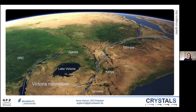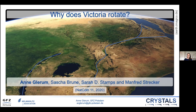The Victoria microplate can be found between the western and the eastern branch of the East African Rift System, which runs from the Afar region in the north all the way down to Mozambique. From geodetic observations we know Victoria is currently rotating independently from Nubia in the west and Somalia in the east. The question we had to answer is why, and I will demonstrate a possible mechanism behind the current rotation of Victoria and how this rotation is controlled by the lithospheric structure of East Africa.